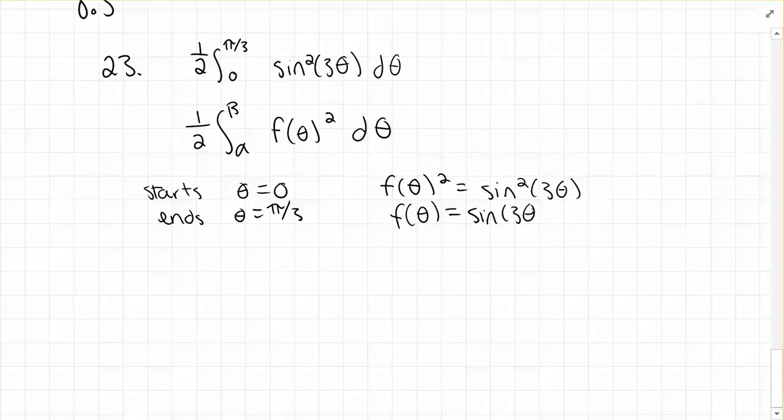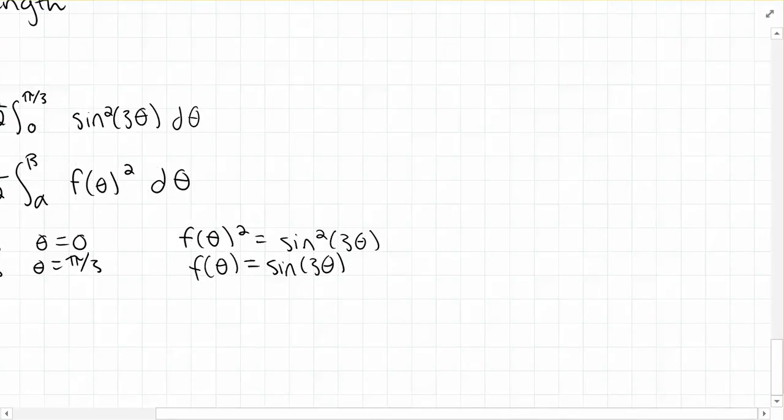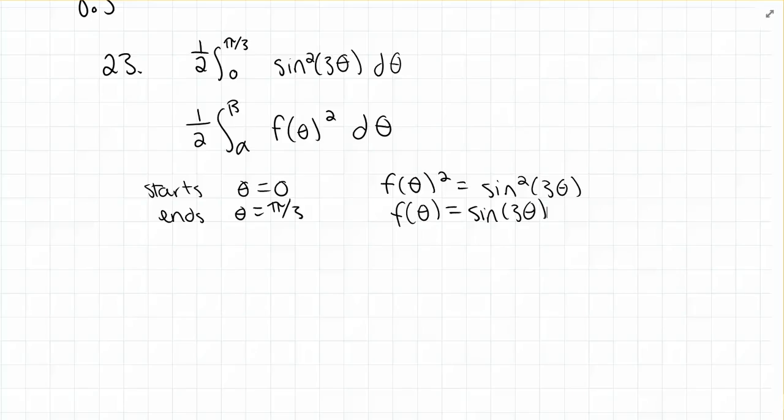So we're sketching the polar region r equals sine of 3 theta from 0 to pi over 3.